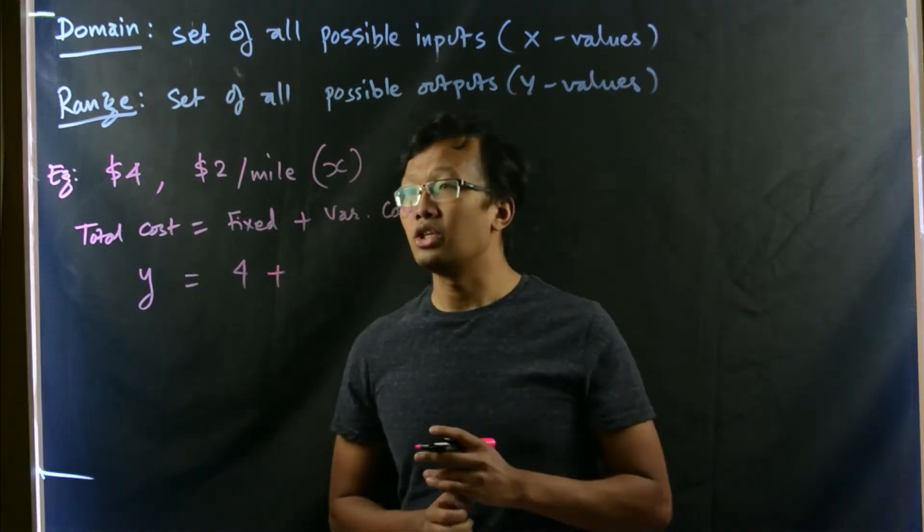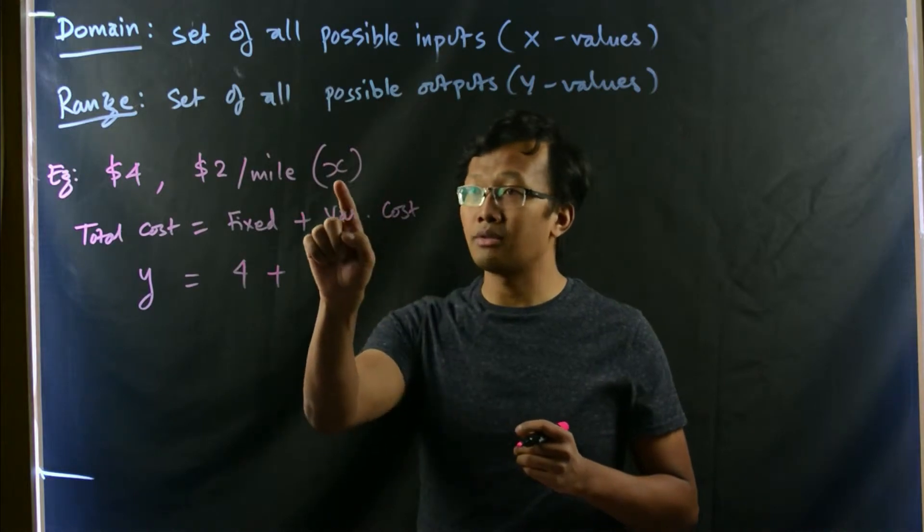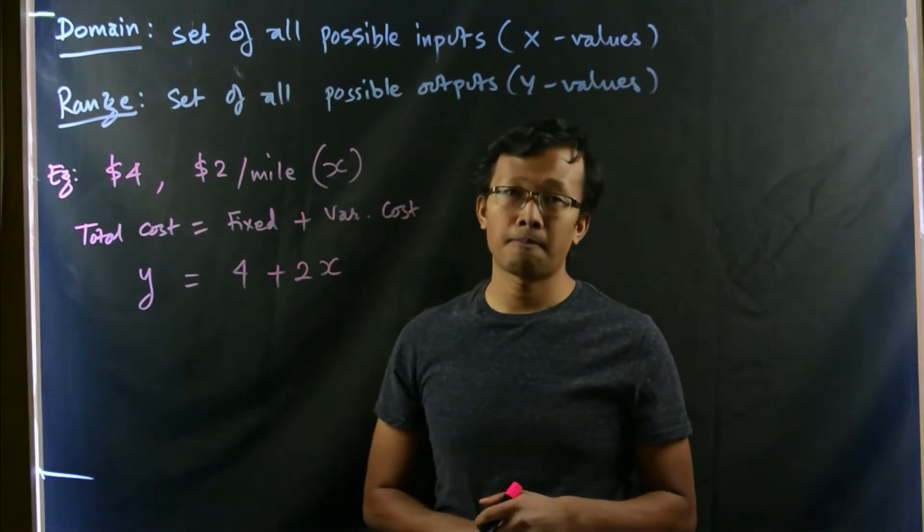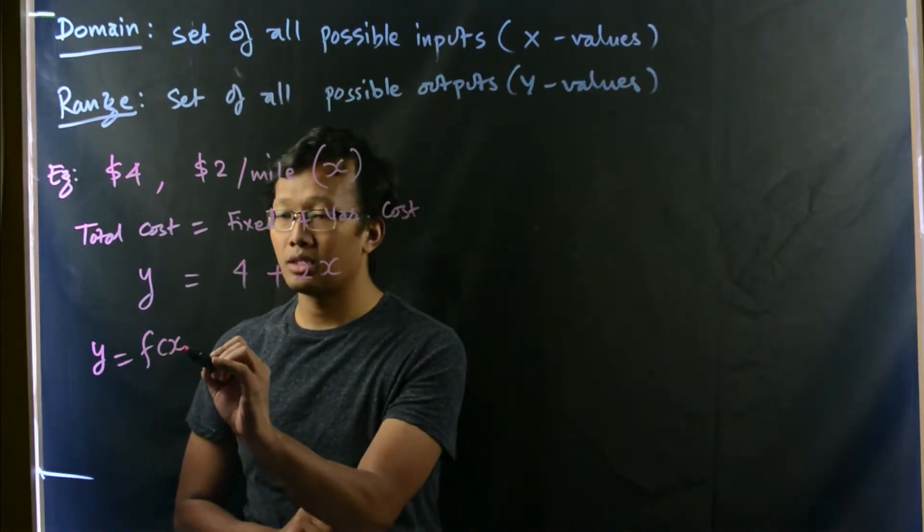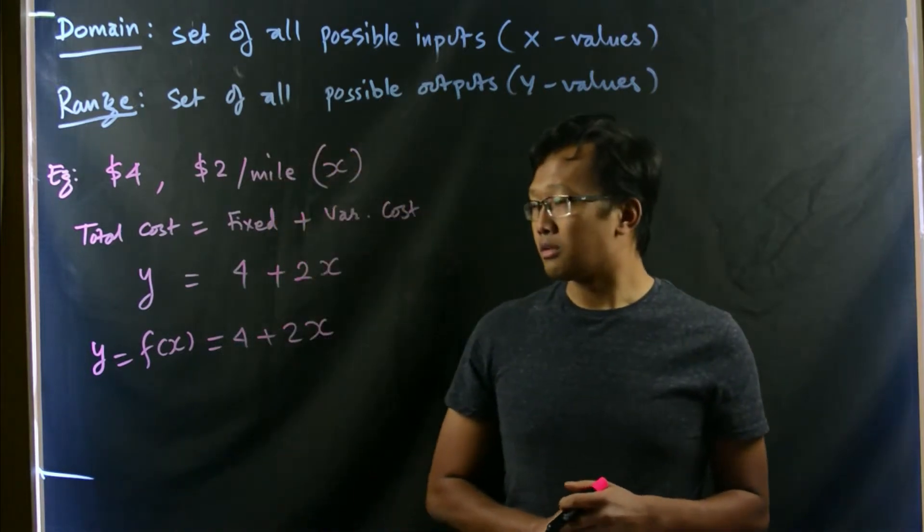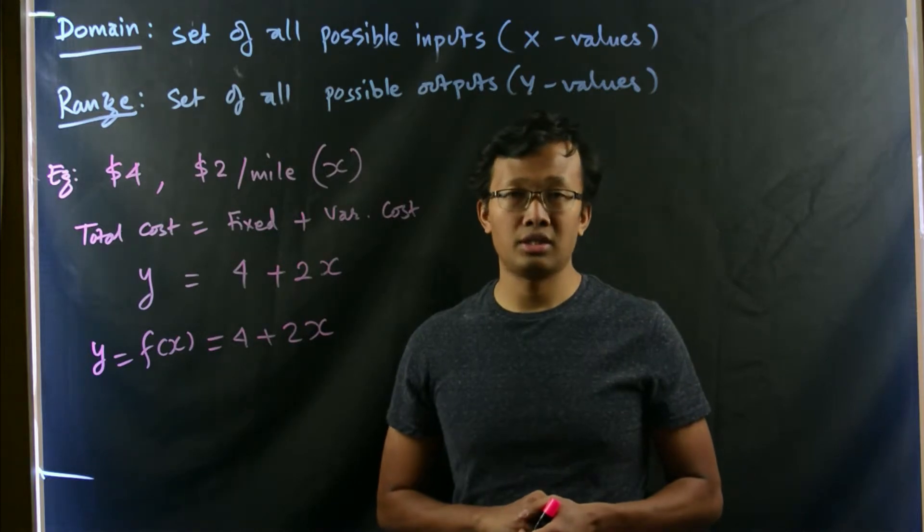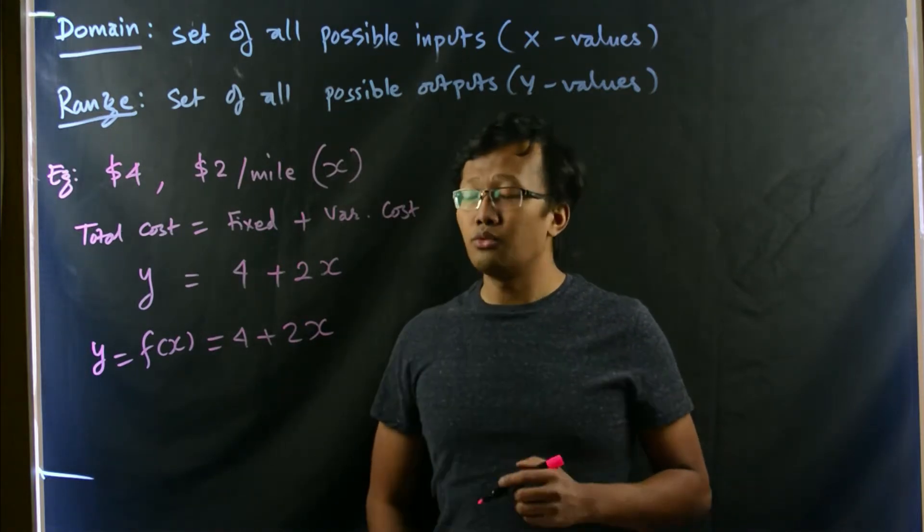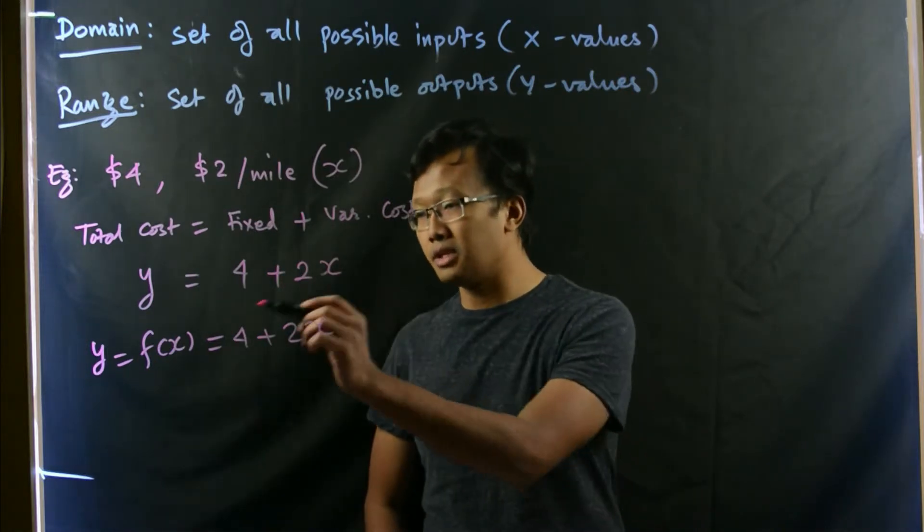And after that, you will be charged $2 per mile. That means if you travel for x miles, then you will be charged 2x. Now, this can be written as y equals to f of x equals to 4 plus 2x. So, that's the function which governs the total cost that you must incur if you rent a taxi. So, we can clearly understand what is the domain and what is the range of this function.